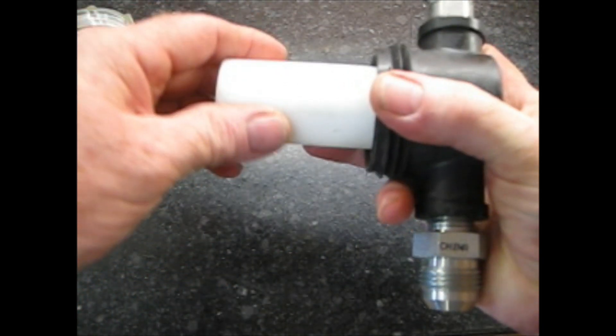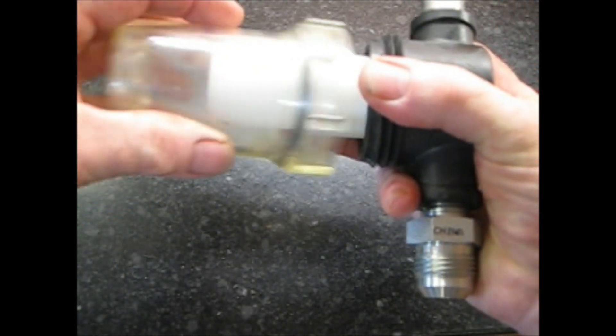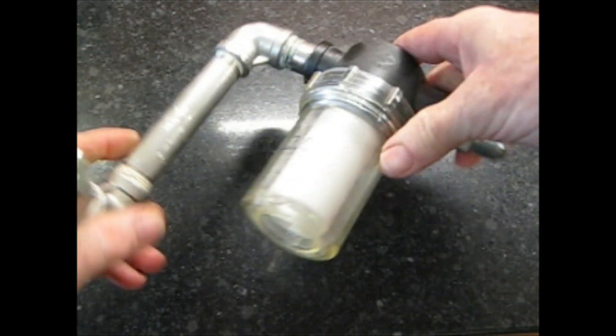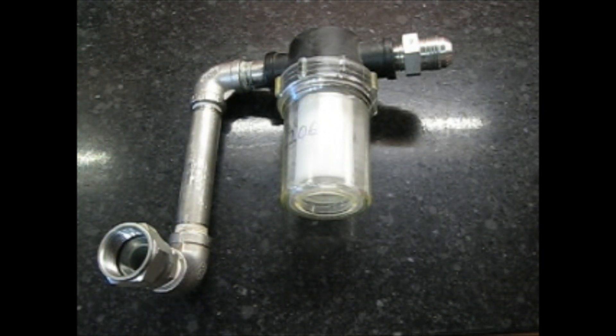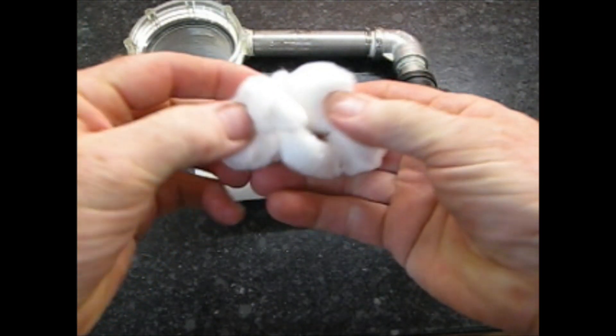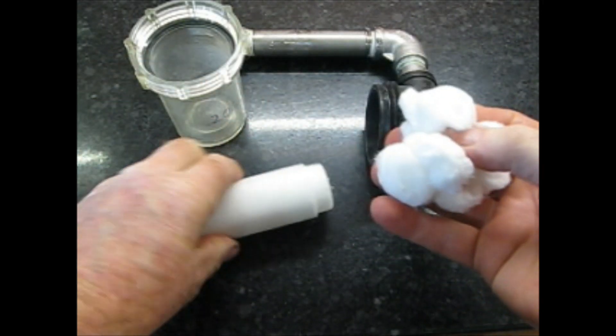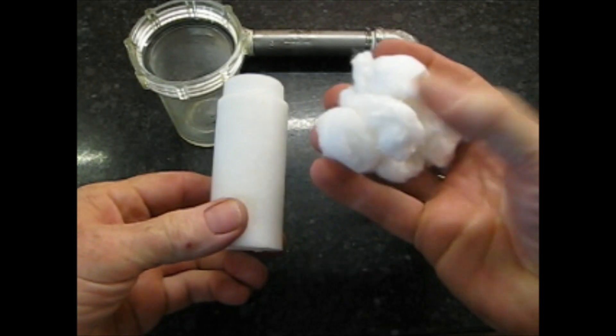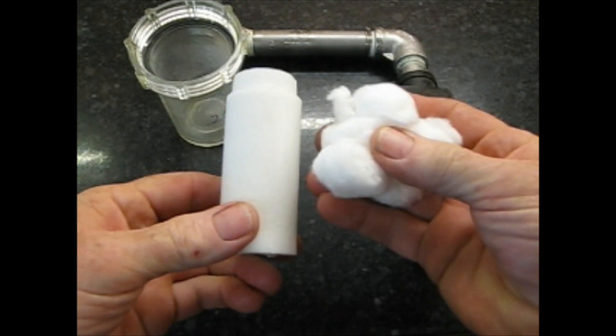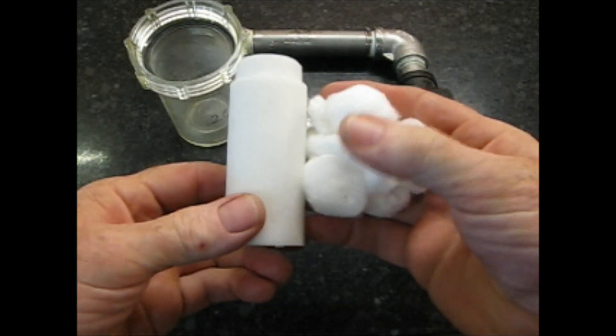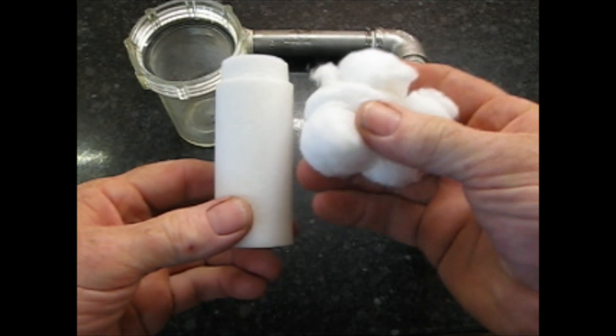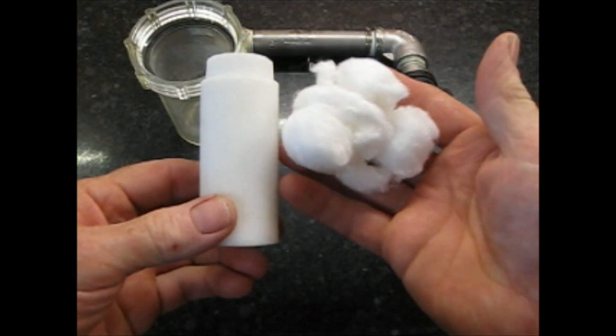But it did do a really wonderful job in filtering out the particulates, the pieces of food that left the freeze-dryer on the way to the vacuum pump. Although my oil still had water in it, it was really clean. The next thing I tried was getting cotton balls and stuffing this filter full to see if the cotton balls would help absorb any moisture. The cotton balls didn't work.